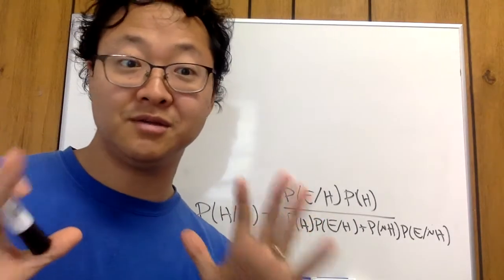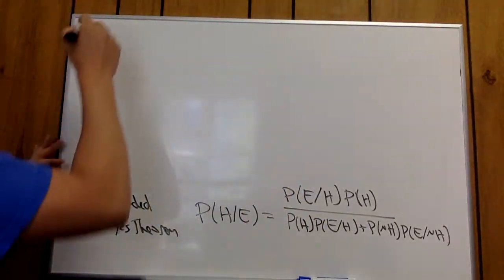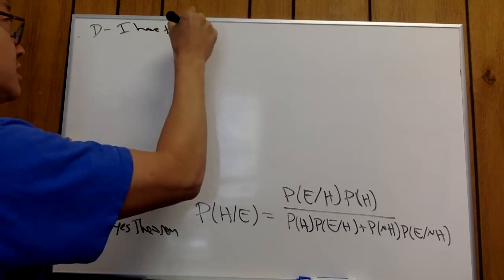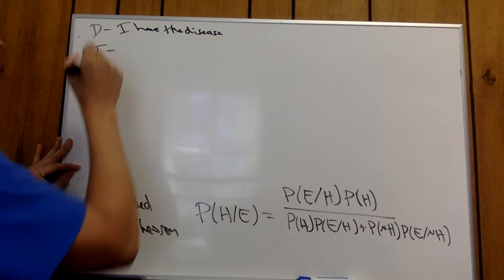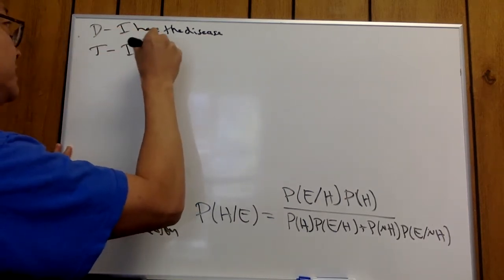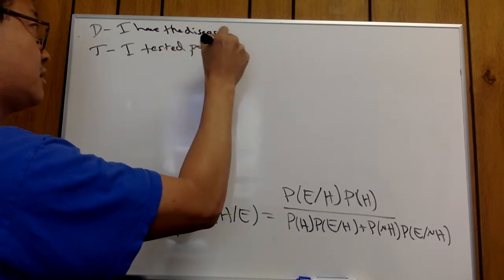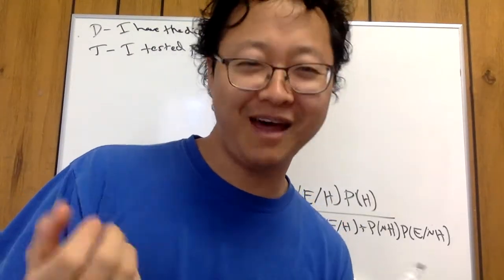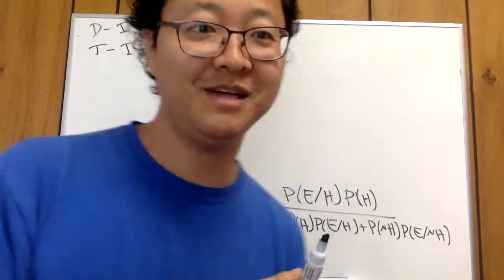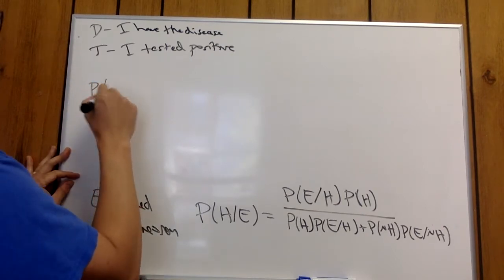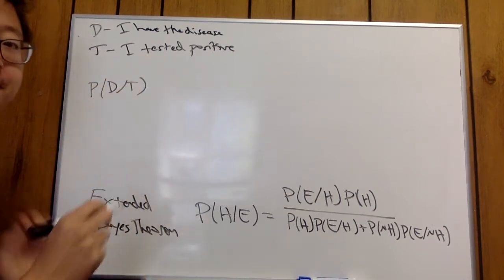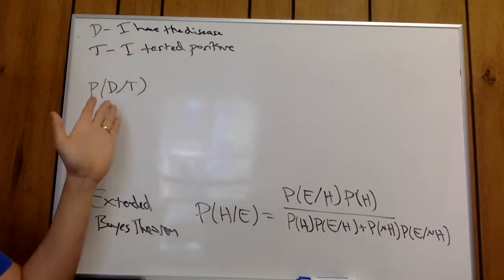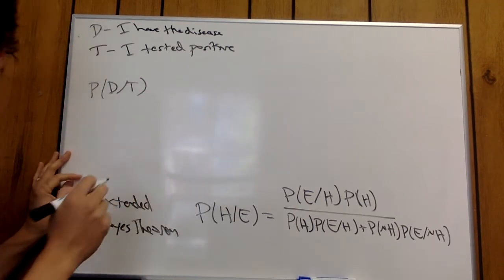Let's think through this carefully — philosophy is best done slowly. Let D be 'I have the disease,' and let T be 'I tested positive.' What we want to know is: what's the probability that you have the disease given that you tested positive? So we want to find the probability of D given T.